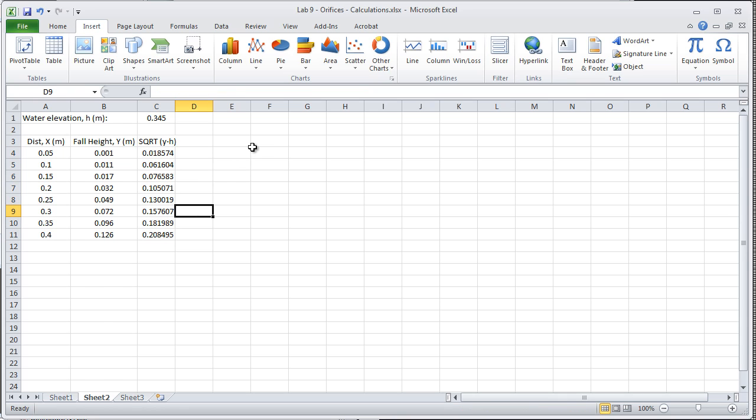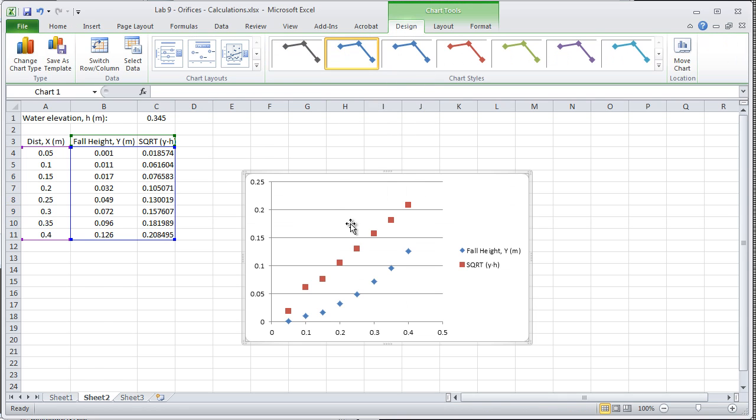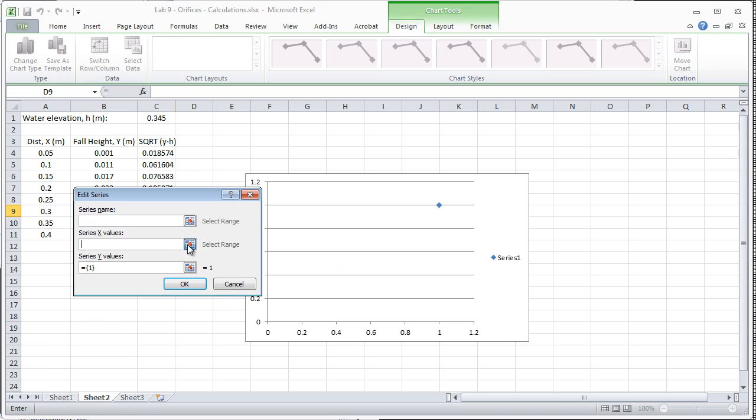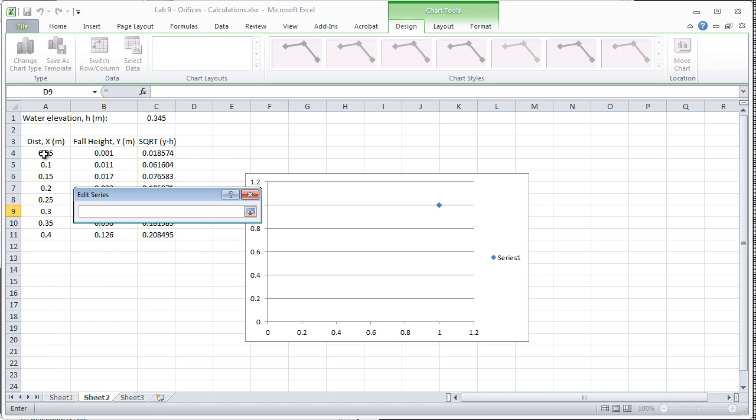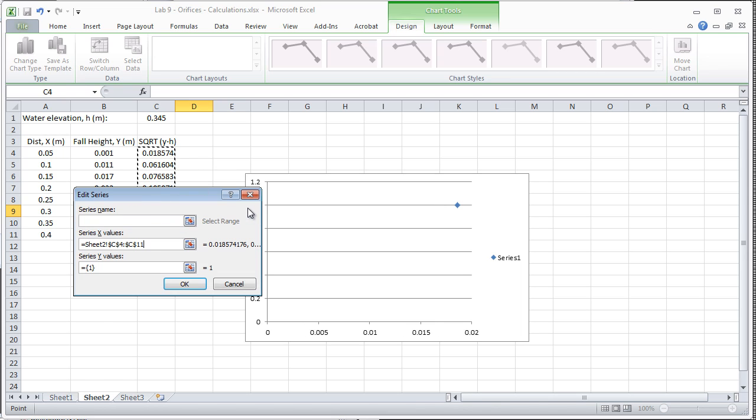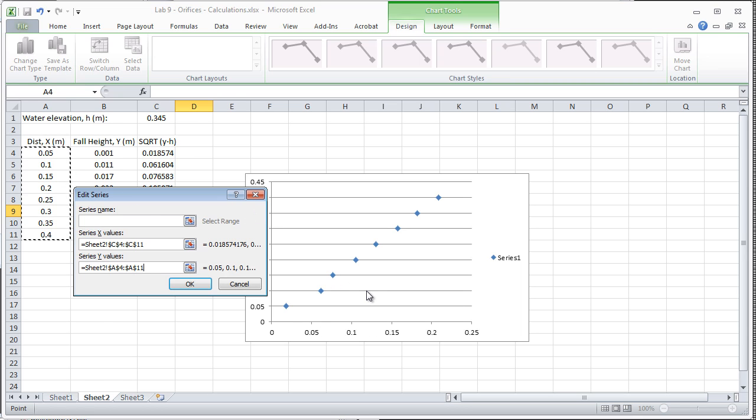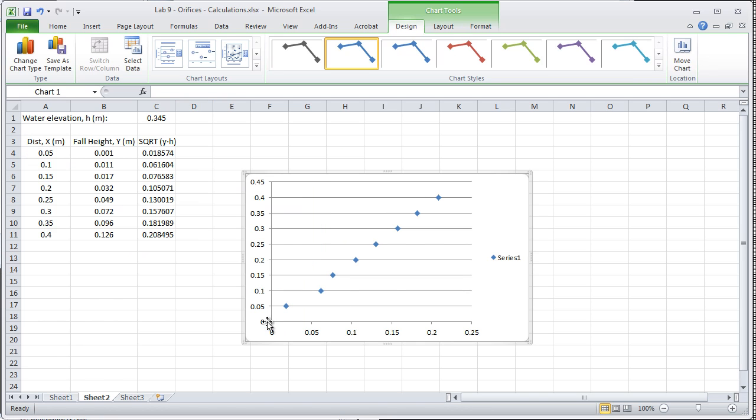And so now I'm going to create a scatter plot. As usual, Excel isn't great at guessing what I want it to plot - I prefer to start from scratch. I want to have on the x-axis the square root of Y times H on the horizontal axis, and on the vertical axis the distance. It's a little unusual, but because of what we're going to be doing with the slope of the line when we find that best fit line, that's what we want it to have.